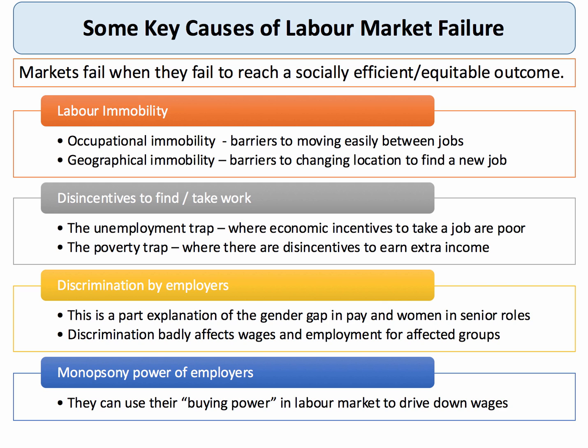This is partly because of the working of the tax and benefits system. There may also be information gaps in the market, leading to discriminatory behaviour by employers. And there is often significant market power in the labour market — in particular, many big employers in a local town or area have monopsony power. They can use that buying power in the labour market to drive down wages and perhaps conditions. So the labour market is a good one to study if you want to think about causes of labour market failure.